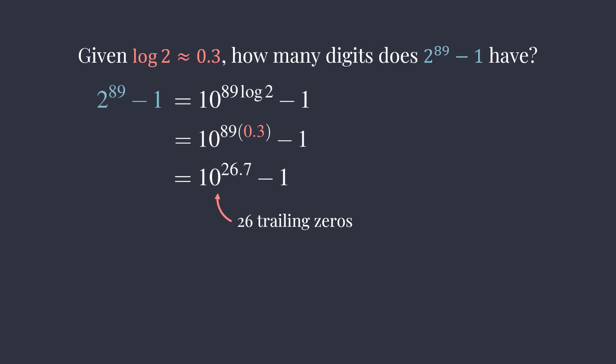And now, we count the leading digit. 2 to the 89 power has 27 digits. After subtracting 1, it still has 27 digits.